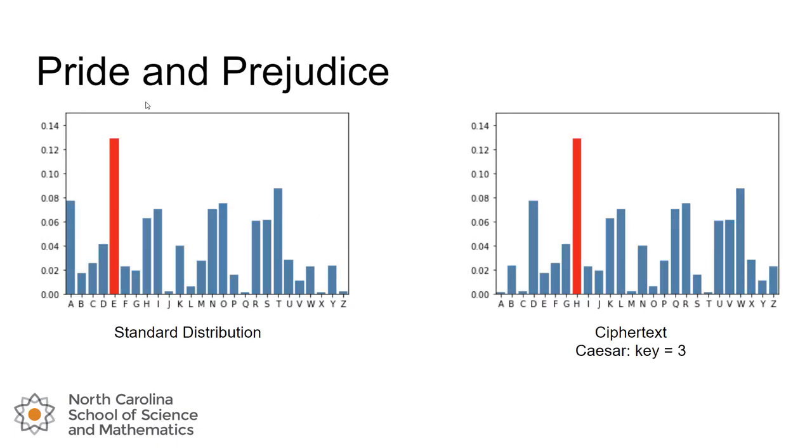Let's take a look at how knowing the standard distribution of the English language can help us learn about our ciphertext. Here we have the entire text of Pride and Prejudice run through a Caesar cipher using a key of 3.